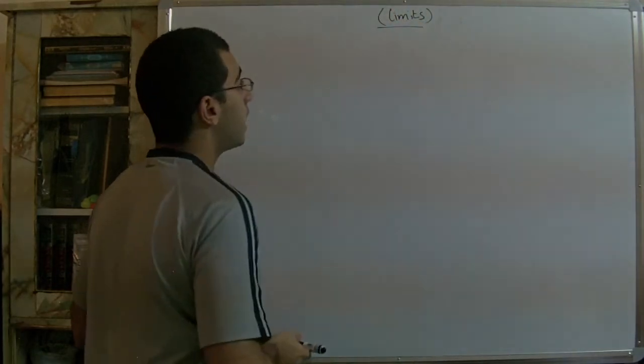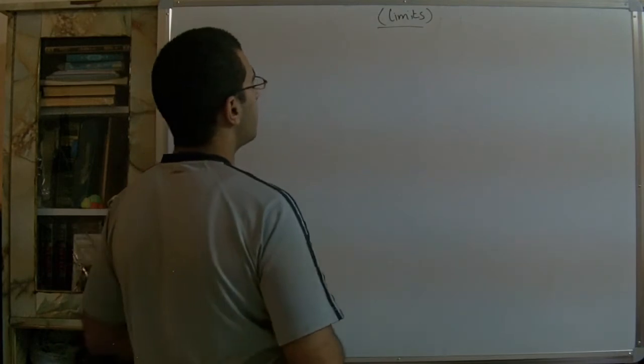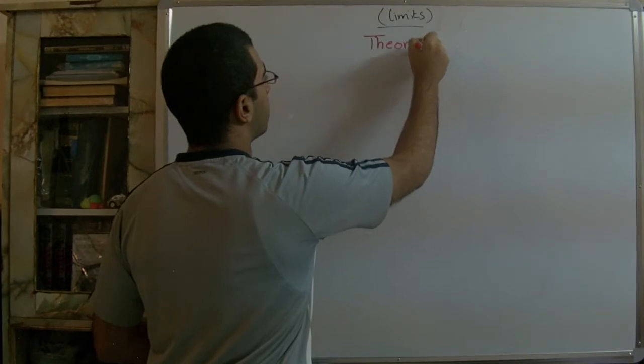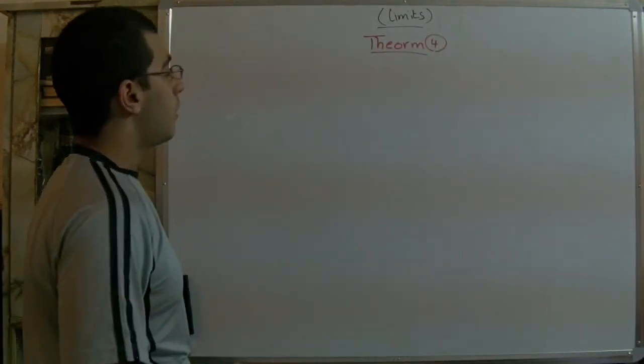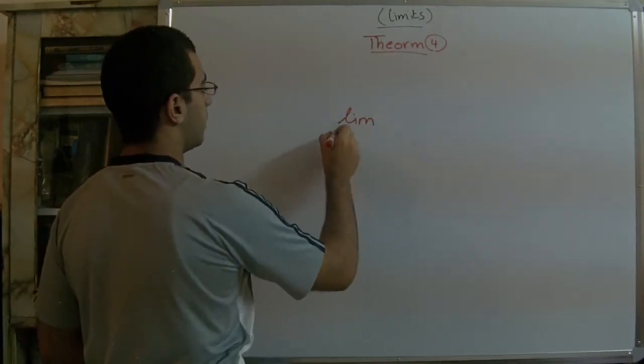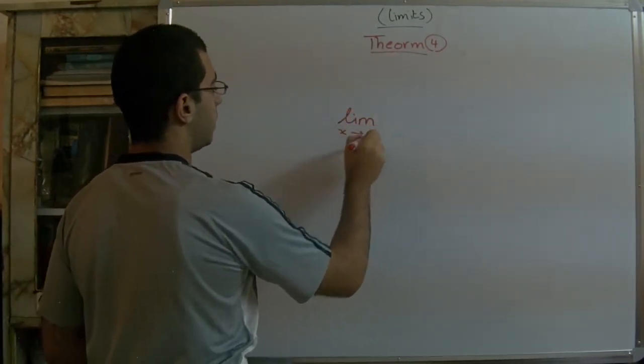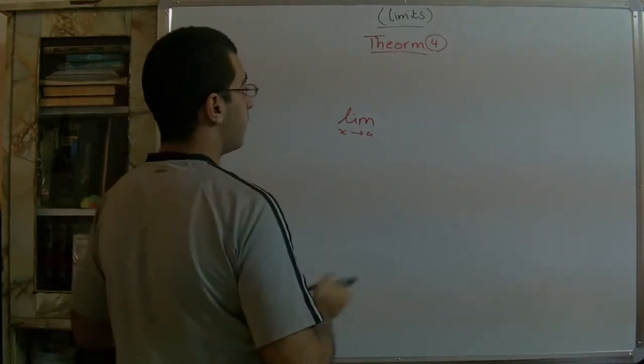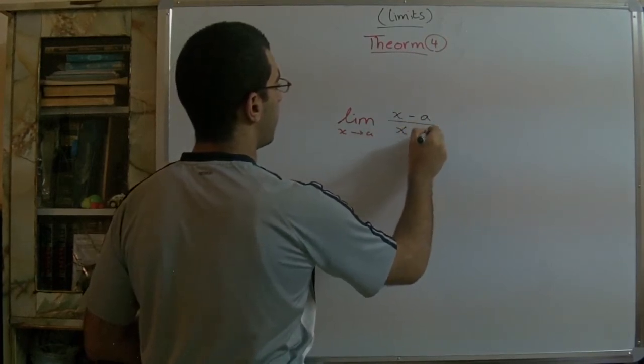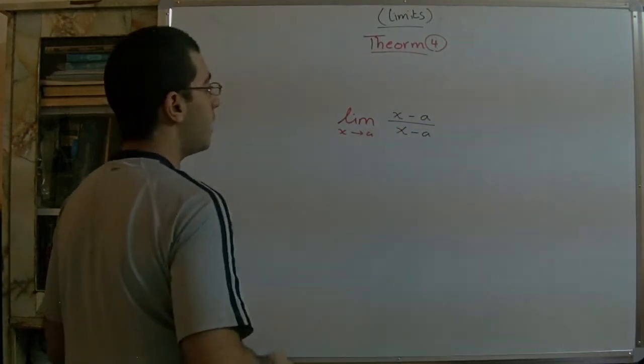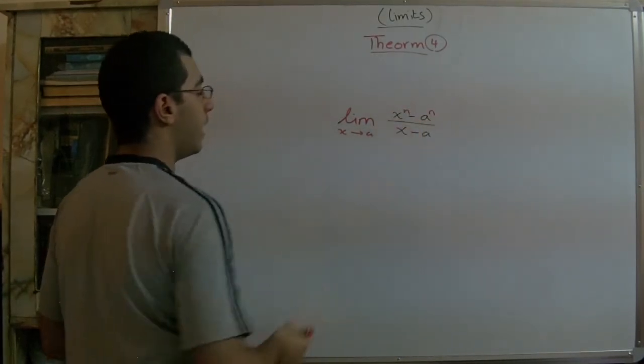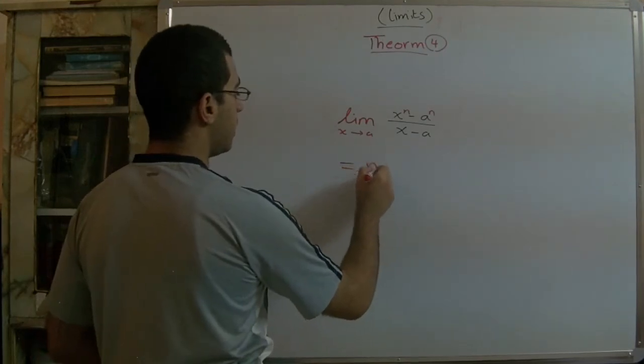And we have a rule today which is called theorem 4. Our rule today states that if limit of x approaches a and here we have the function in this form: x^n - a^n over x - a. And we have here an exponent which is equal for the x and the a.